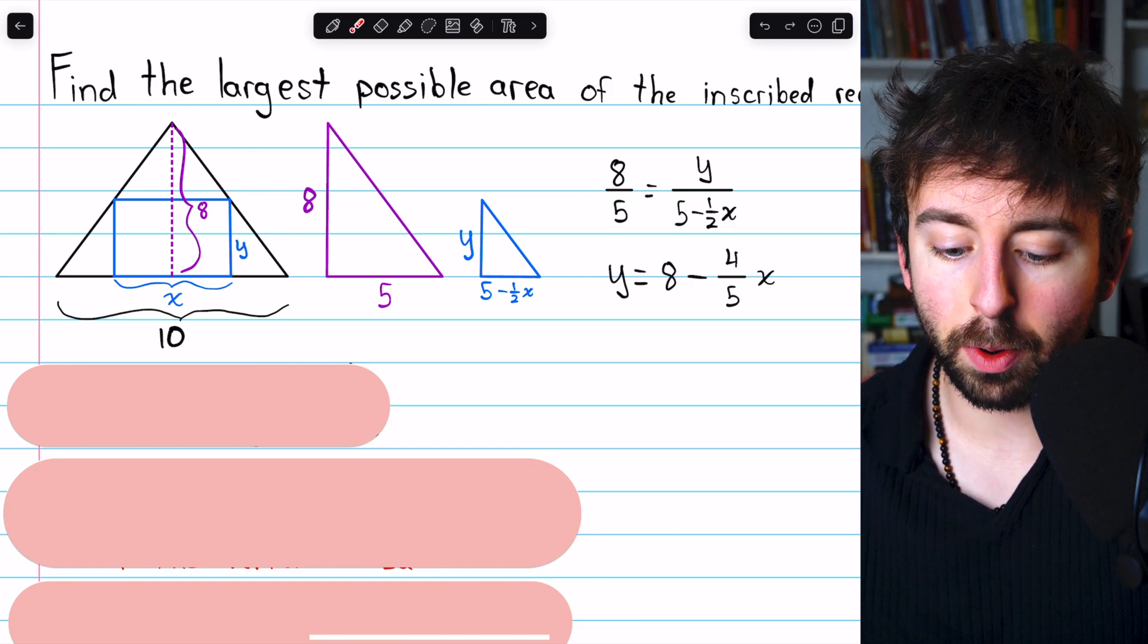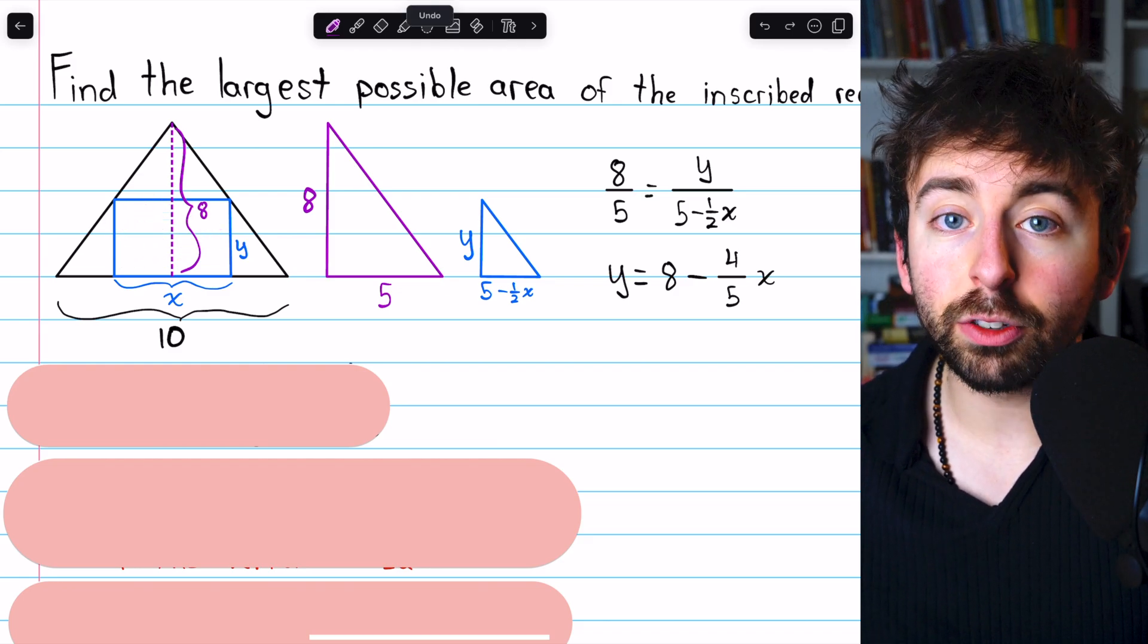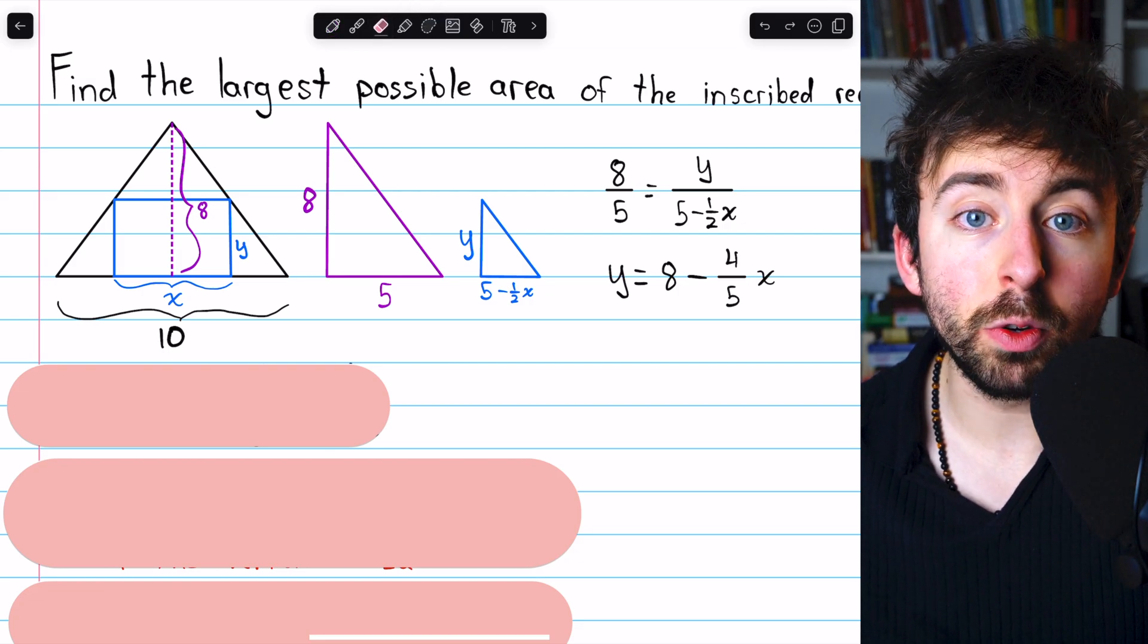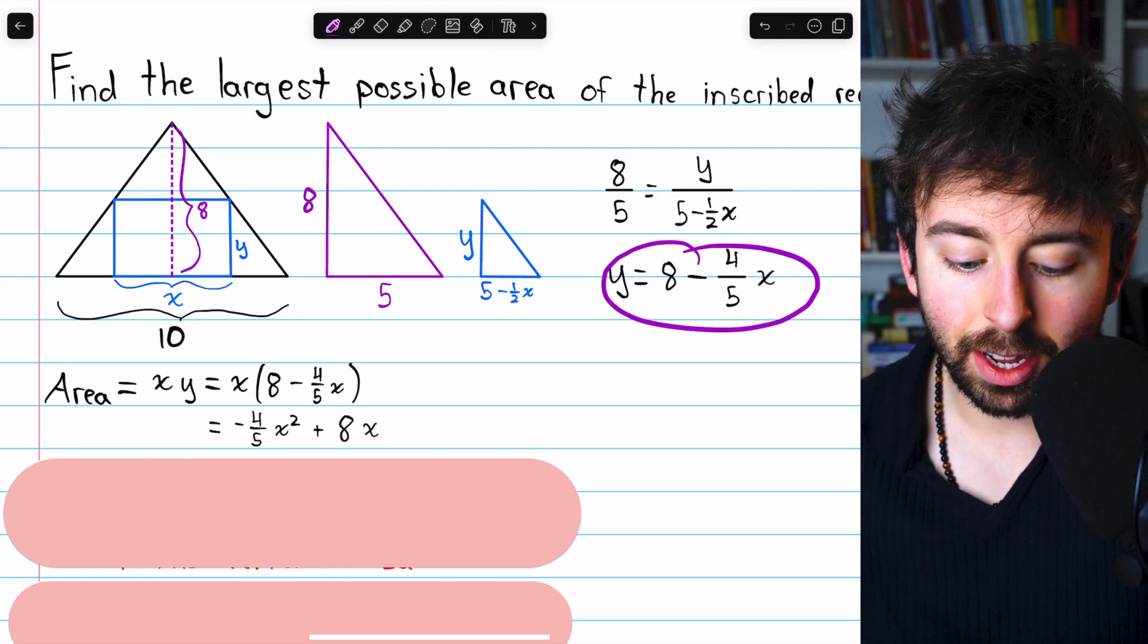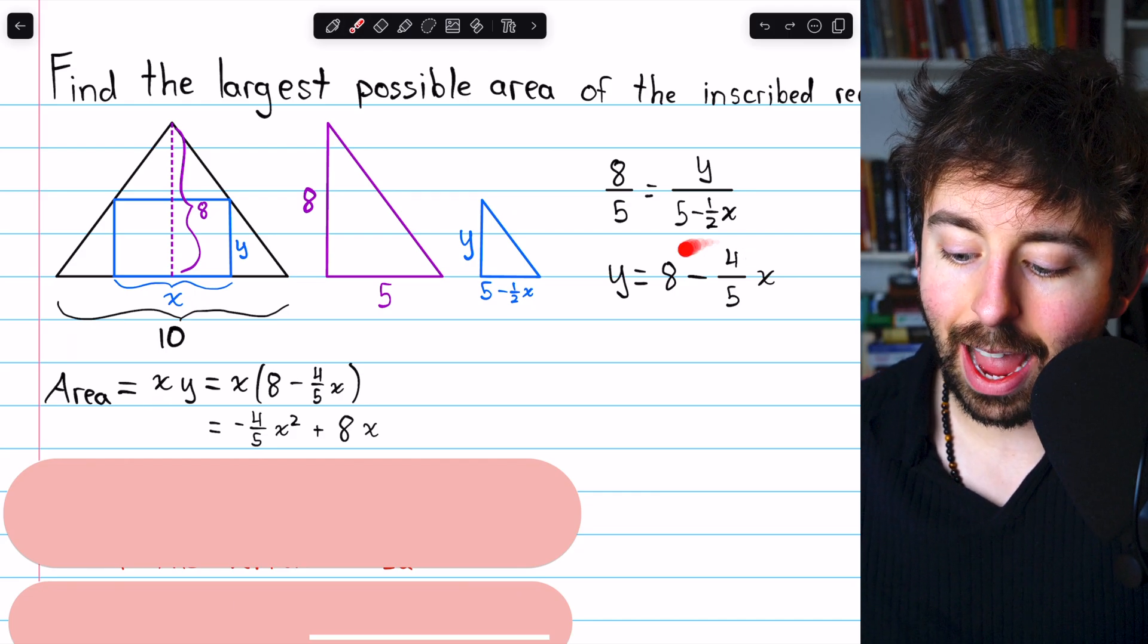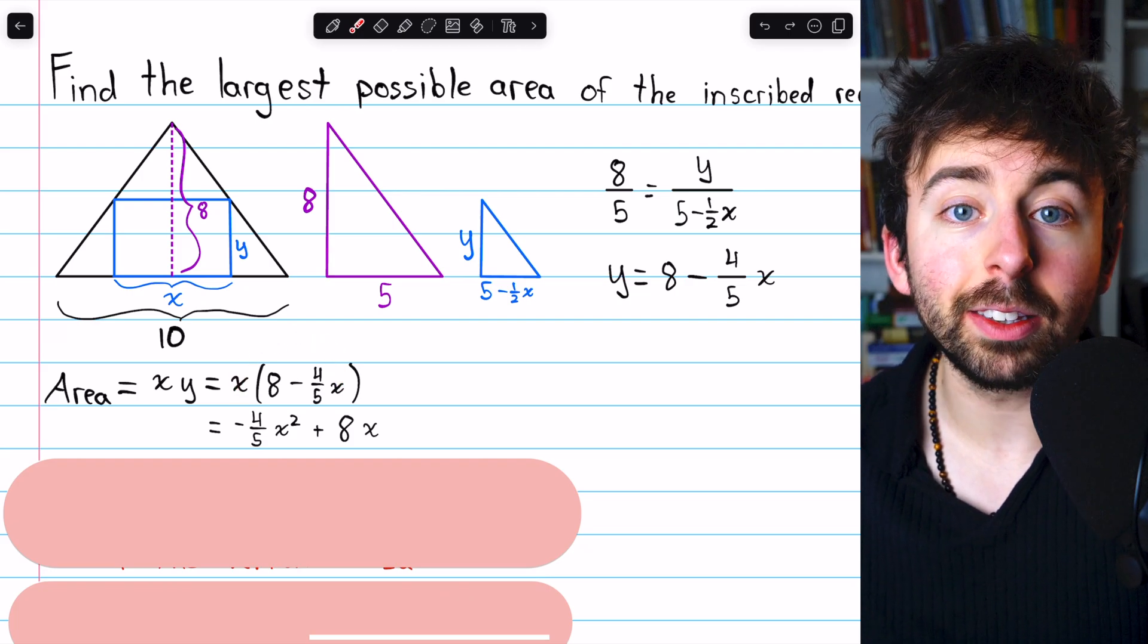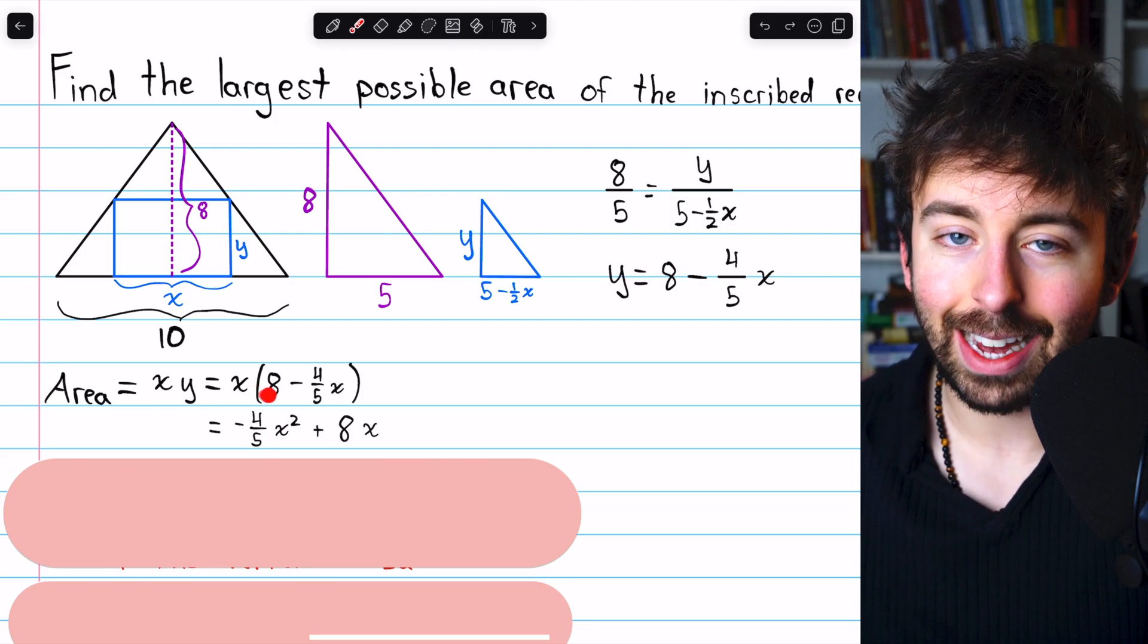This is useful because we're trying to maximize the area of this inscribed rectangle. We can express that area as xy, that's base times height. That's a little bit difficult to work with because it has two variables, x and y. But now we know what y is in terms of x. So the area we're trying to maximize is xy. We know y is 8 minus 4 fifths x, so the area is x times 8 minus 4 fifths x. Distributing the x and putting the squared term first, we have minus 4 fifths x squared plus 8x.